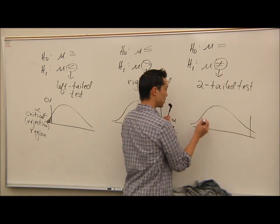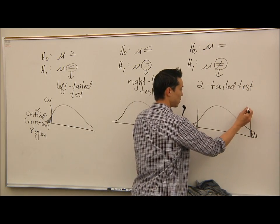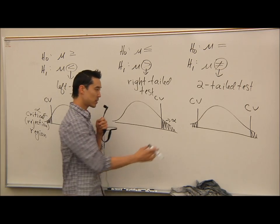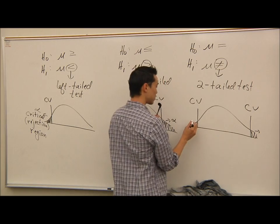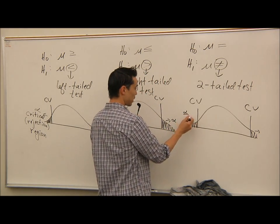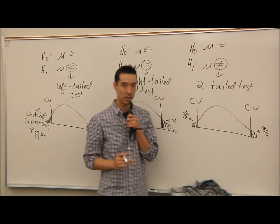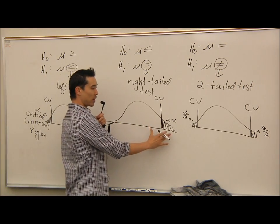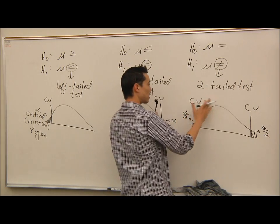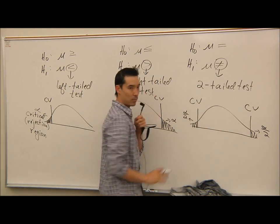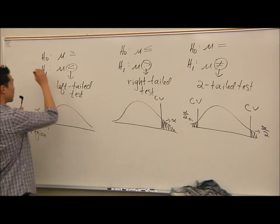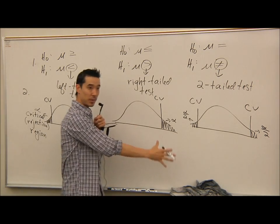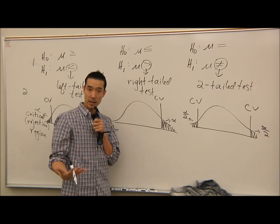For a two-tailed test, you have two tails and two critical values. Since alpha is always the total area of the shaded region, each tail gets alpha/2 — just like confidence intervals. So: left-tailed has alpha area in the left tail marked by CV; right-tailed has alpha area in the right tail; two-tailed has critical values on both sides with alpha/2 in each tail. Step one: state H0 and H1. Step two: determine left-, right-, or two-tailed and draw your picture. Alpha will be given to you.